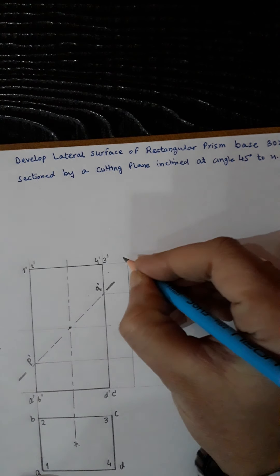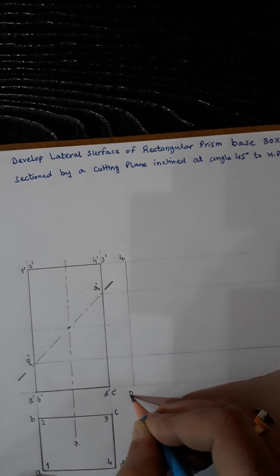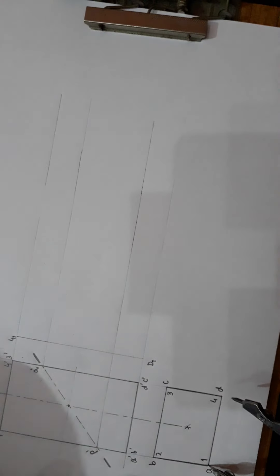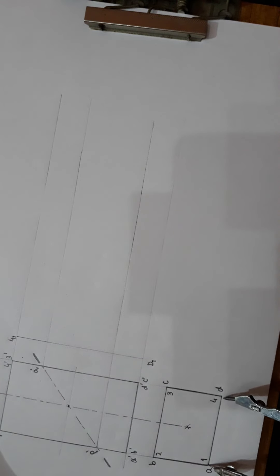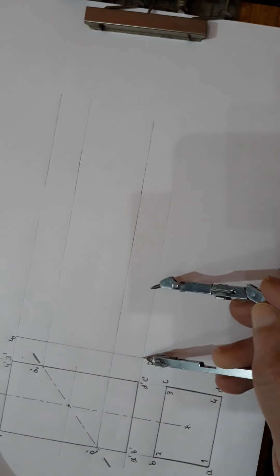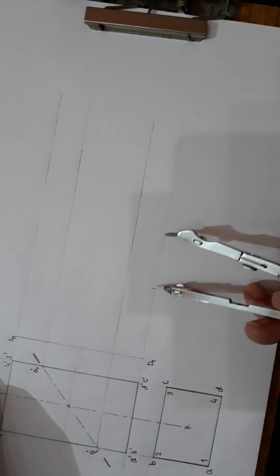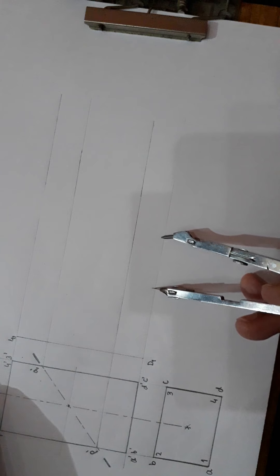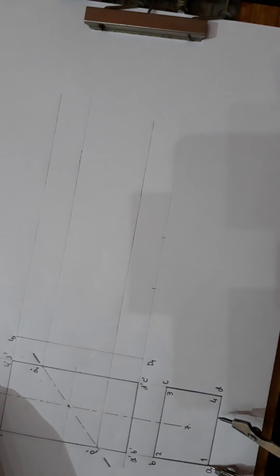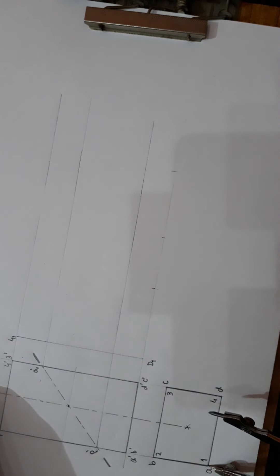Name the starting point as 4₁, d₁. Simply take the width from the top view — take 40mm and mark it, then take 30mm from there and mark it. Alternately mark 30 and 40 because it is a rectangular prism.